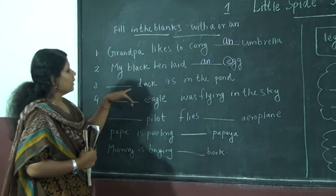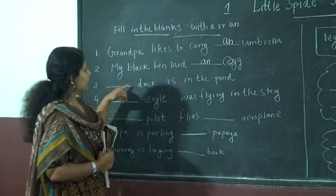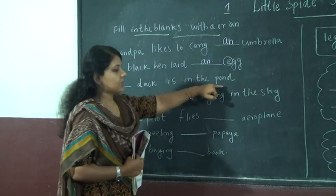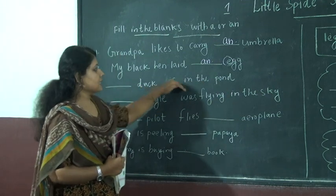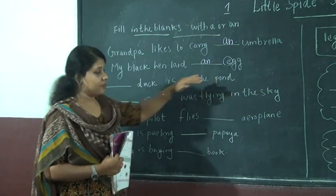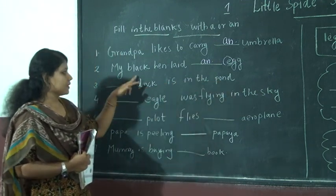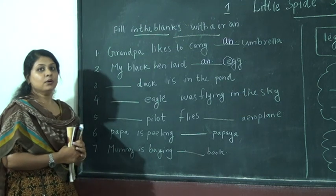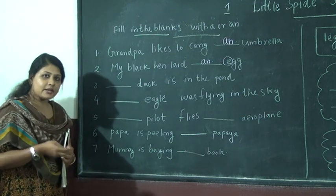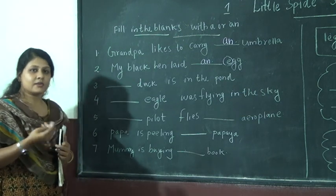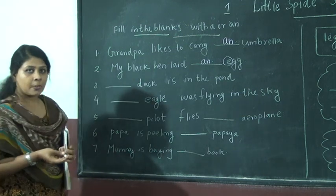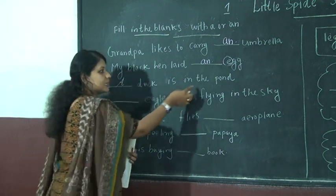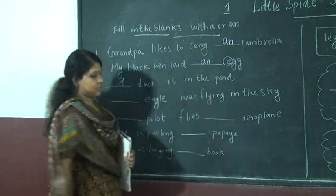Third one: Dash duck is in the pond. The word is duck. The first letter is D. D is not a vowel, so A is the right one. A duck is in the pond.